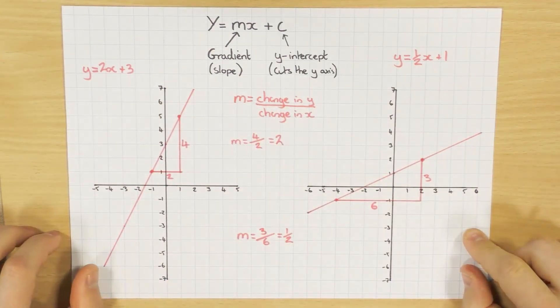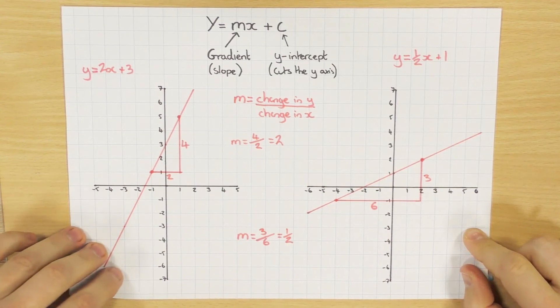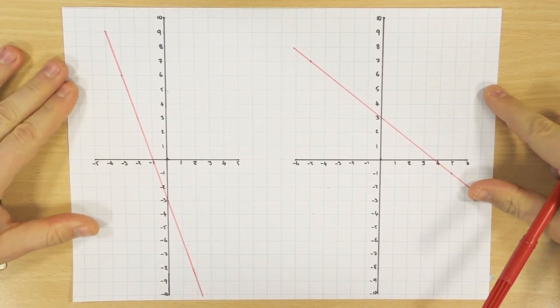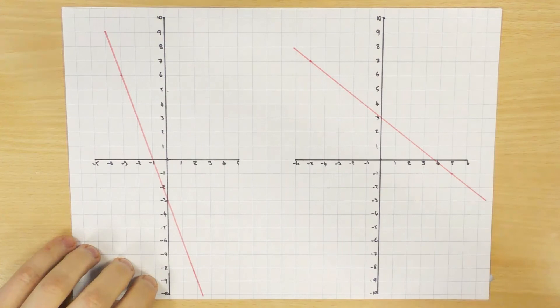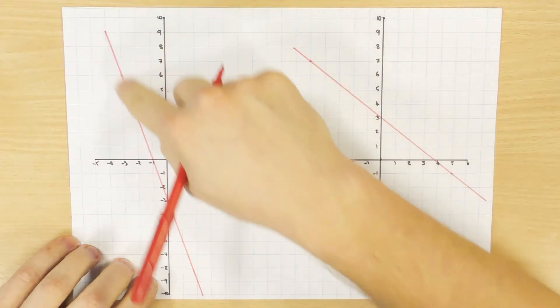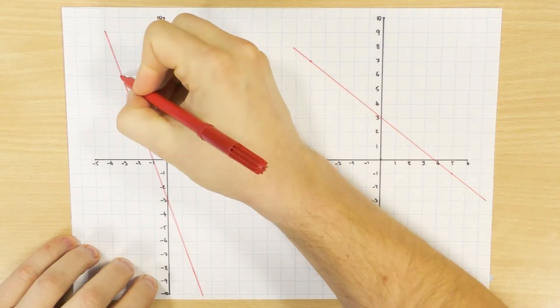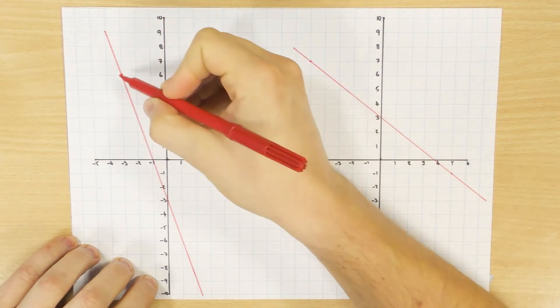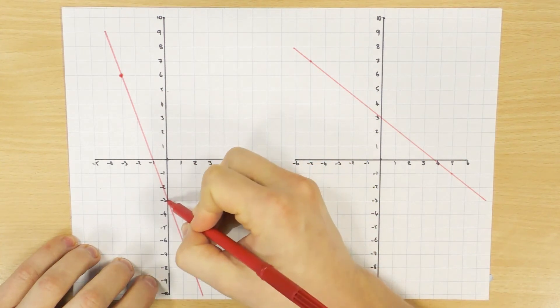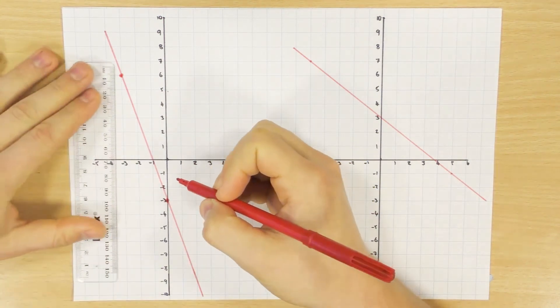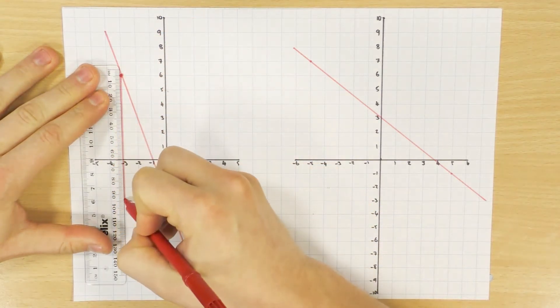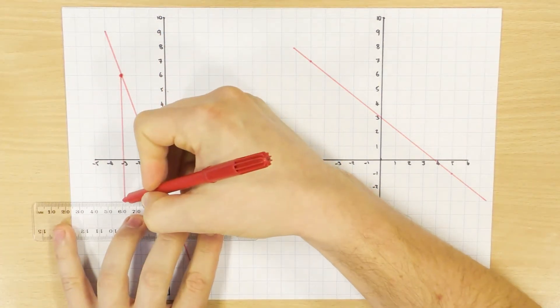And we're now going to have a look at something just ever so slightly trickier, which are these ones here. So the process is still exactly the same thing. But you might have noticed the line is actually decreasing. So we'll have a look at what that does in a minute. But the strategy is still the same. You still pick two coordinates. So that was one there. And I'm going to go for that one there as well. So as long as you pick two coordinates that are on the line, it doesn't matter. It'll work.